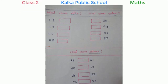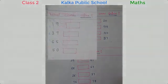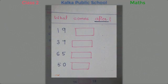So first, what comes after? I hope you know that after means forward counting. Like 19. What will come after 19? 20, right?